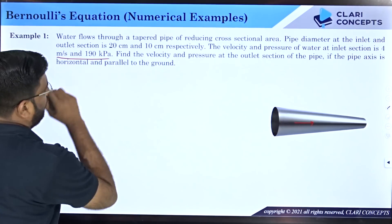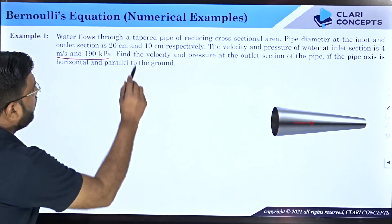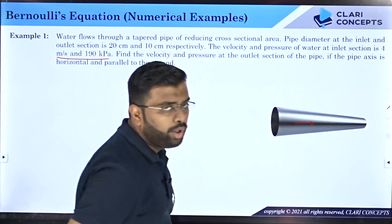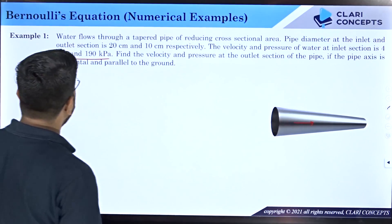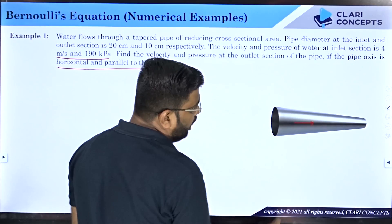At this particular inlet, the velocity and pressure are given to you. Find the velocity and pressure at the outlet section of the pipe, so you need to find v2 and p2, if the pipe axis is horizontal and parallel to the ground.